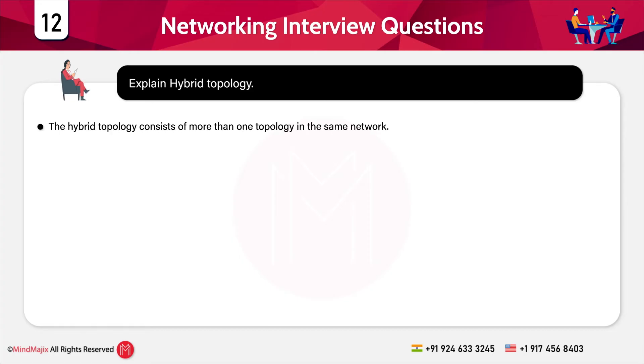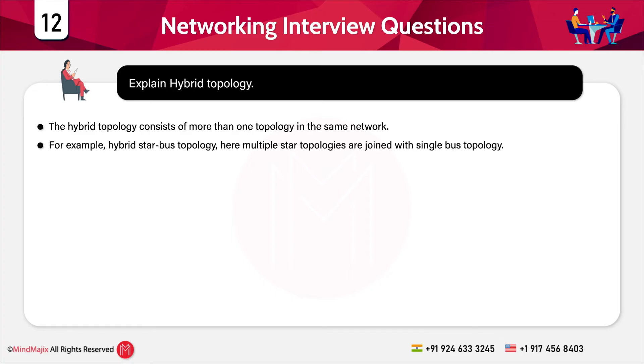The next question is: explain hybrid topology. Hybrid topology consists of more than one topology in the same network. For example, hybrid star-bus topology is where multiple star topologies are joined with a single bus topology.